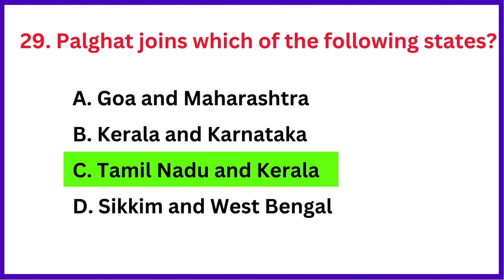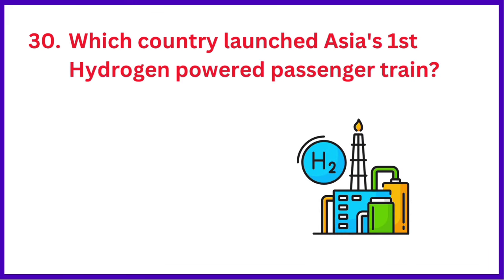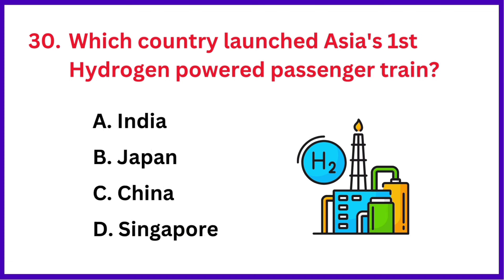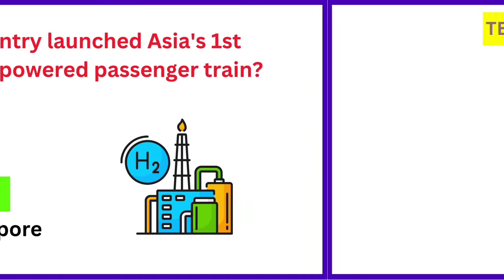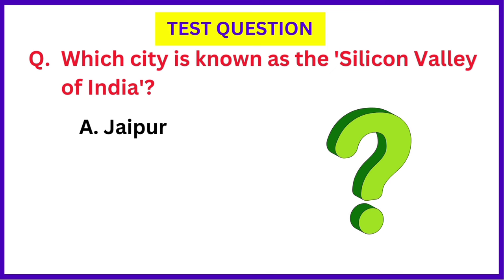Which country launched Asia's first hydrogen-powered passenger train? The correct answer is option C: China. Today's test question: which city is known as the Silicon Valley of India? If you know the right answer, please do share your answer in the comment section below.